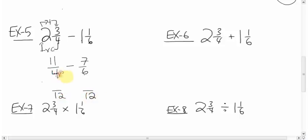How did four become twelve? Times by three. Do the same to the top. Eleven times three? Thirty-three. Don't forget the subtracting sign. How did six become twelve? Times by two. Do the same to the top. Seven times two is fourteen. When we subtract thirty-three minus fourteen, we get nineteen over twelve.